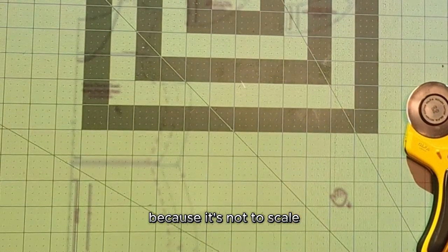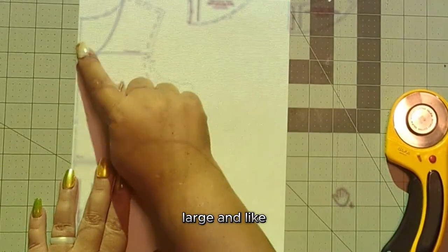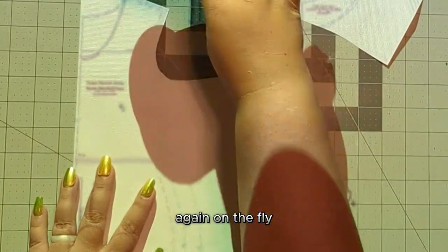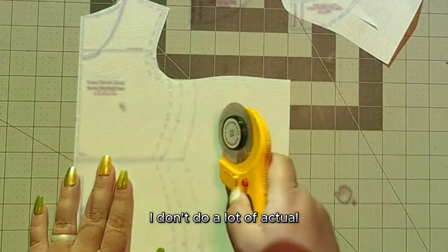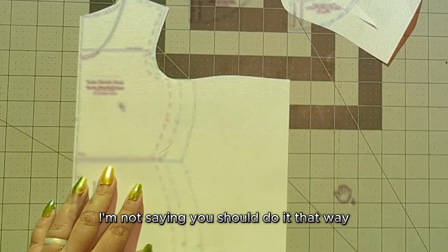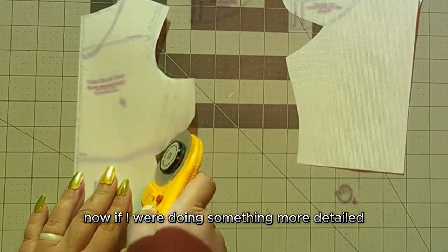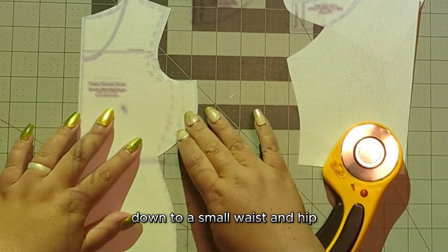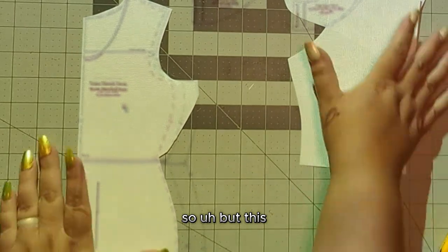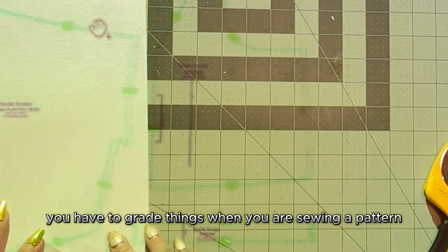And like I said, this is an exaggerated example because it's not to scale. So the small, medium, large is probably more like extra small, large, and like 2x or something like that, just so that the lines would be more clear on the screen. So this is just how I cut again on the fly. I don't do a lot of actual full bust adjustments. I usually just cut the larger size. I know that's not proper. I'm not saying you should do it that way. I'm just saying that's how I do it. And I get pretty decent results. Now, if I were doing something more detailed, like see this, for this example, I was grading a large bust down to a small waist and hip. And you can see that that's pretty extreme. Again, this is not to scale. But this is an extreme example of how sometimes you have to grade things when you are sewing a pattern.